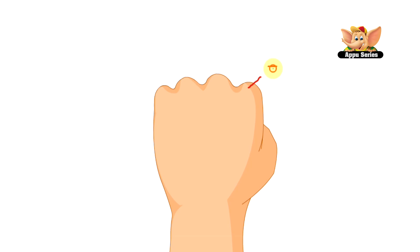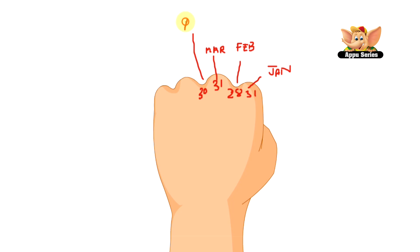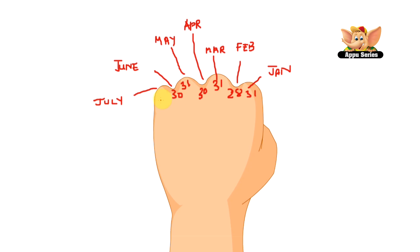Let me show you how it works. The first knuckle is January — 31 days. The next gap is February — 28 days. The next knuckle is March — again 31 days. Going down, April is 30 days. The next knuckle is May — again 31. After that is June — 30 days. Then we have July — 31 days. All the knuckles are 31 and in between the knuckles it's either 28 or 30.